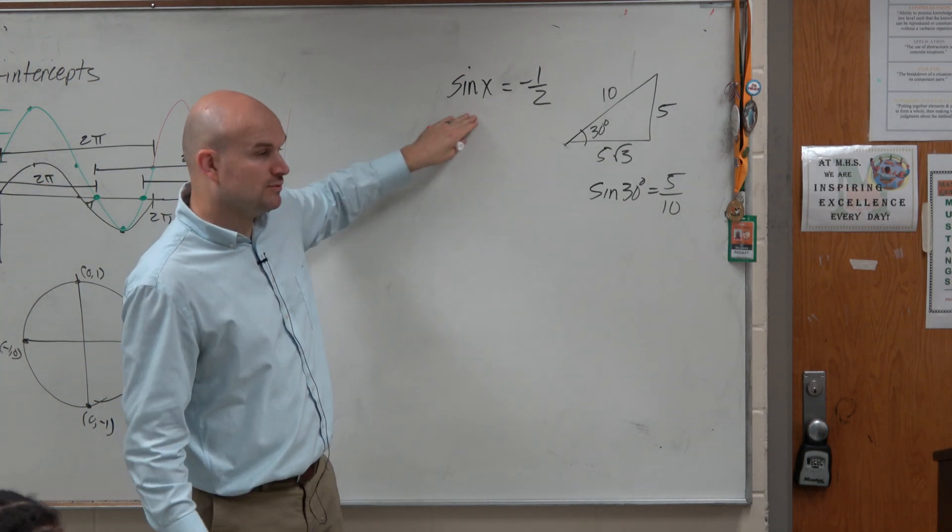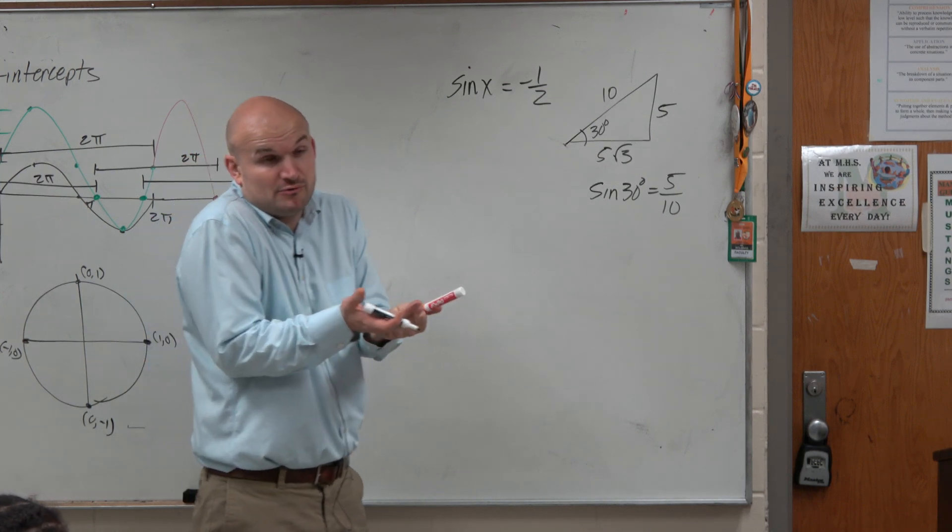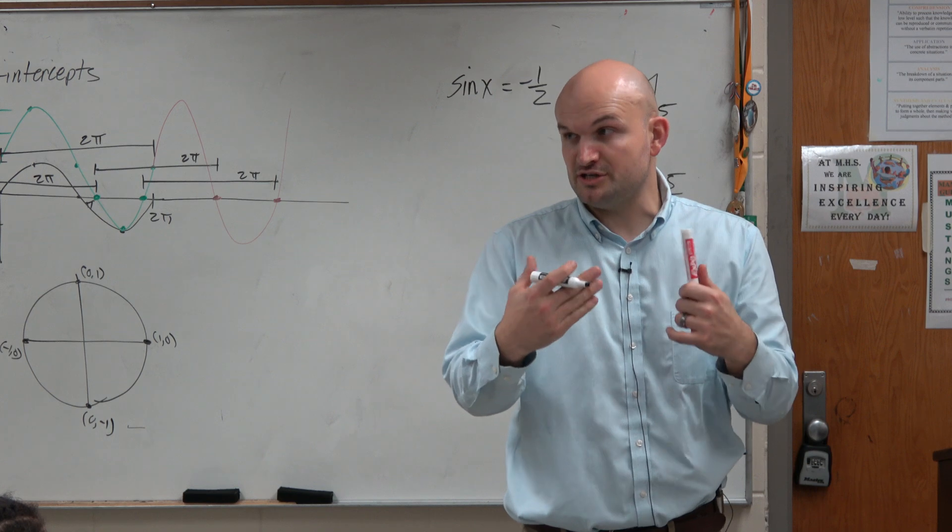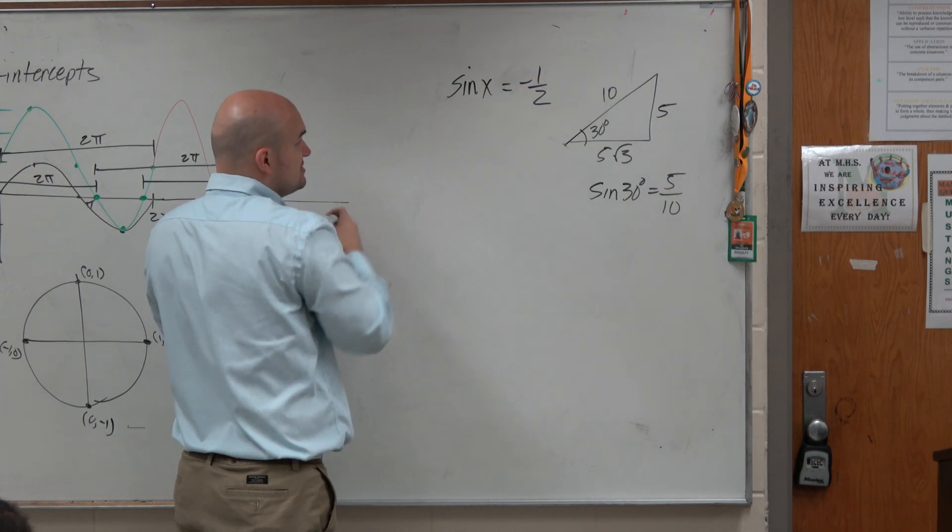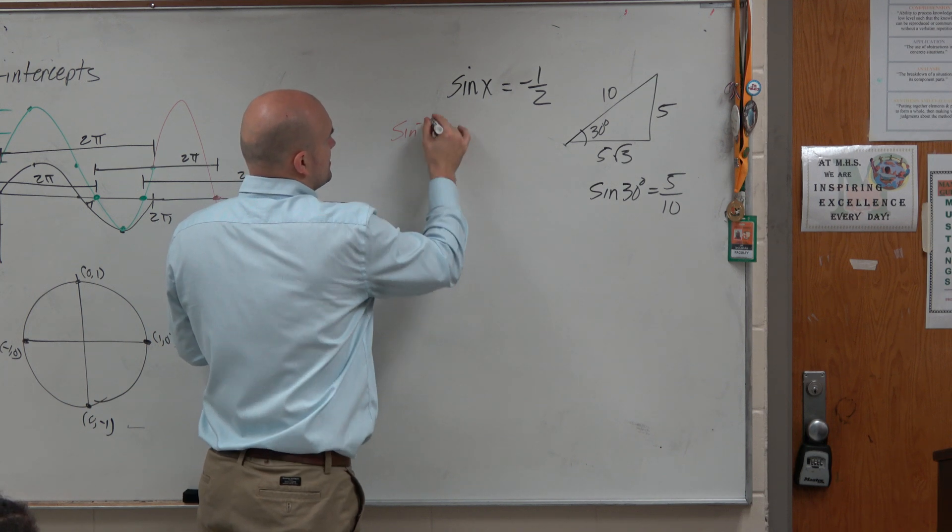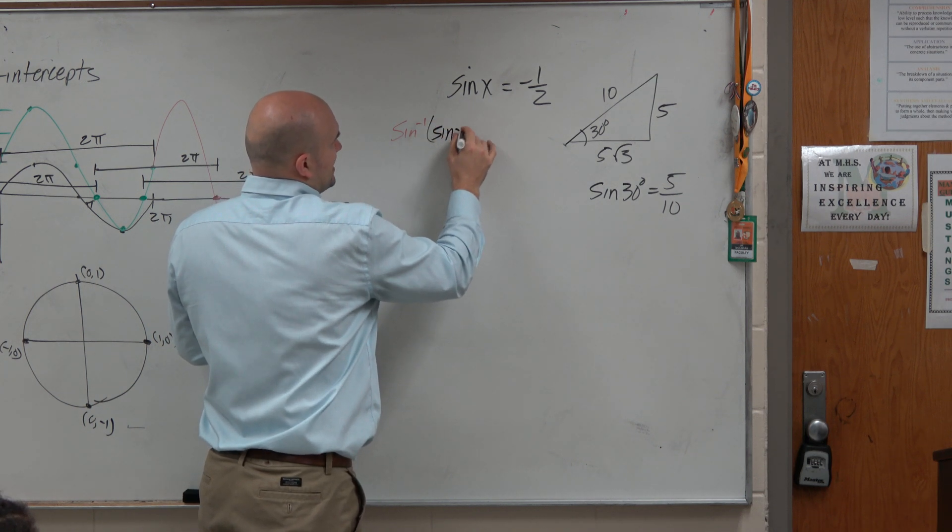So when we want to solve this, when we use our inverse operation, that's exactly what the inverse function is - it's the inverse operation of sine. So to solve for x here, to undo sine, we're just going to take the sine inverse of sine of x on both sides.